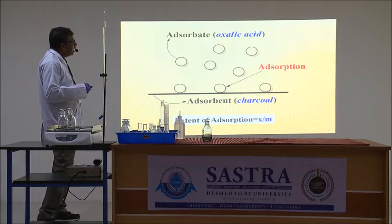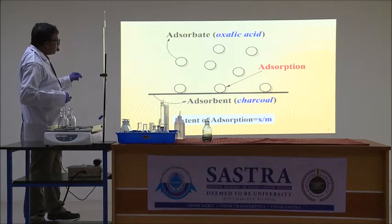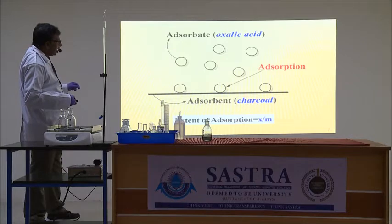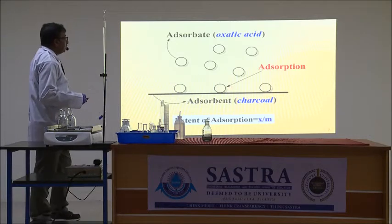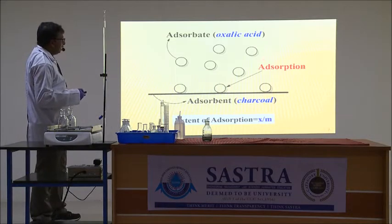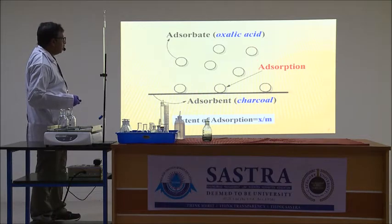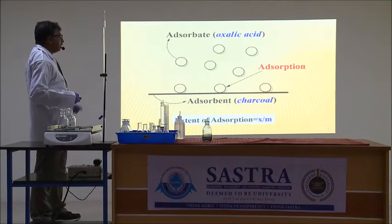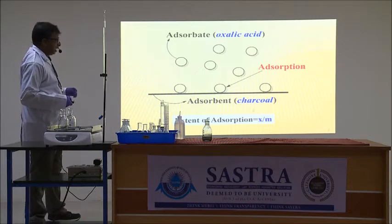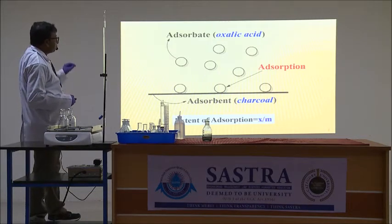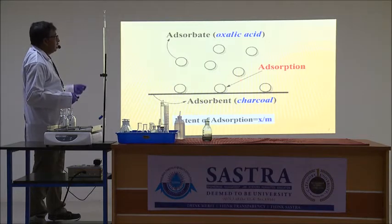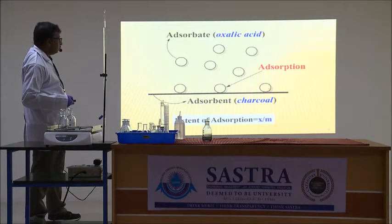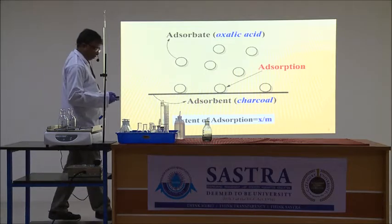In our experiment, oxalic acid molecules are the adsorbate. The place where these molecules are sitting is known as the adsorbent. In our experiment, charcoal is the adsorbent. If X grams of adsorbate are adsorbed on M grams of adsorbent, then the extent of adsorption is defined by the ratio X by M — the amount of adsorbate per gram of adsorbent.